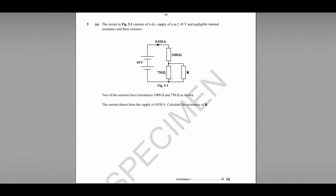We know the value of one of the two parallel resistors: 750 ohms. And we know the current passing through the 1000 ohm resistor, although we don't know how that current splits once it gets to this junction here. We need to calculate the unknown value R.